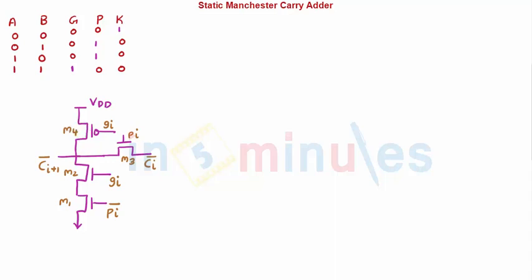Let's get started with different cases and see whether we achieve the functionality. Case 1 would be when my generate signal is high. When generate is high, we know that kill and propagate both are 0, and we want Cout to be equal to 1. Let's see if the circuit gives us that.